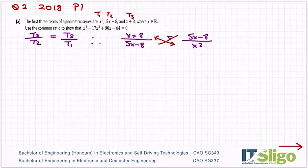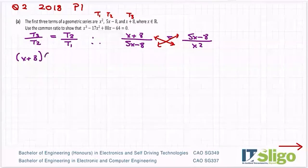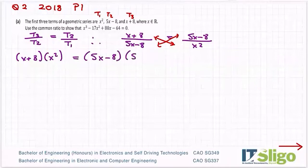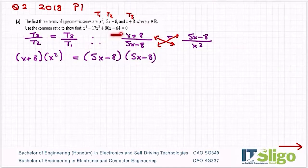Just like in the last one, let's cross multiply again, so that I end up with x plus 8 times x squared is equal to 5x minus 8 times 5x minus 8. Let me just make sure I've made no mistakes: x plus 8 over 5x minus 8, 5x minus 8 over x squared — looks good.